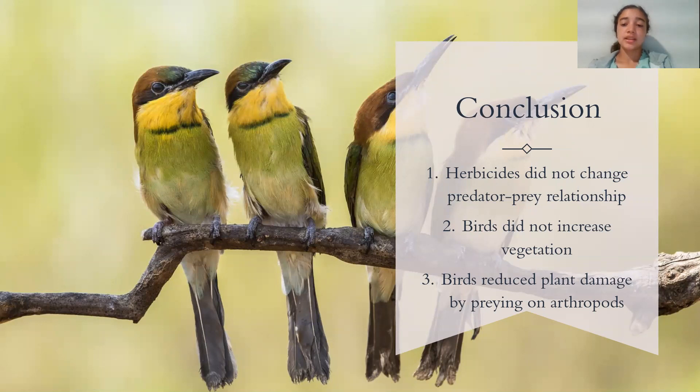In conclusion, the herbicides did not change the predator-prey relationship between the birds and the arthropods, and the birds did not increase vegetation, but they did reduce plant damage by preying on the arthropods, which is a good thing. They didn't get the results that they wanted, but they were still glad that this is now a known fact that birds reduce plant damage.